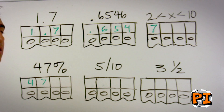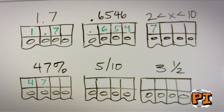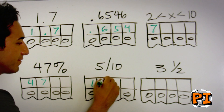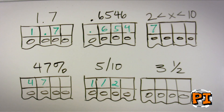If the answer is something like 5 tenths, you can write in 5 over 10, you can write in 1 half, or you can write in .5. Any of these will be recognized as the right answer. You move on.